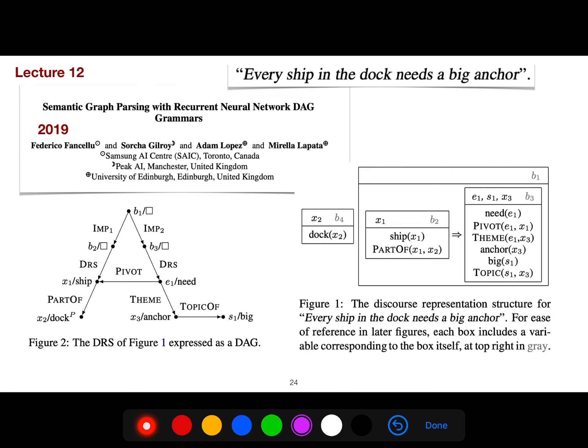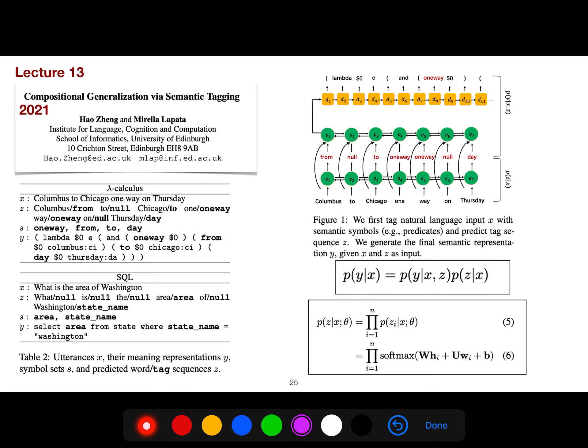In lecture 12, I talk about different formalism, which is discourse representation structure, DRS. And this is a DAG, direct acyclic graph. You see, it doesn't have a cycle, but still it's a graph. It's not a tree, but it's a graph.